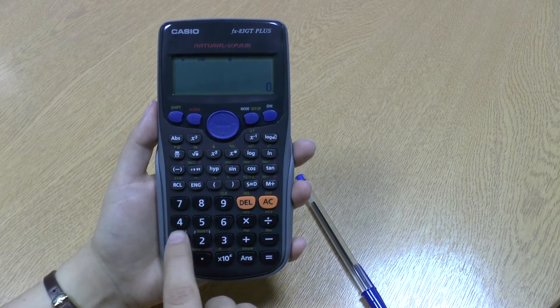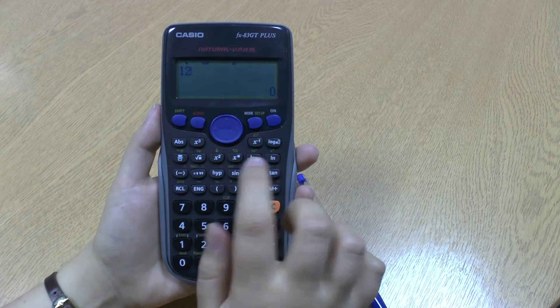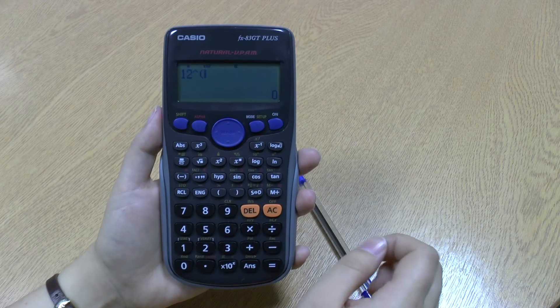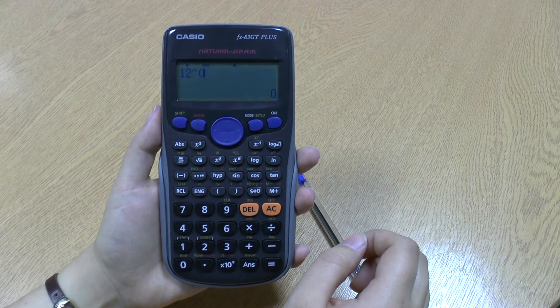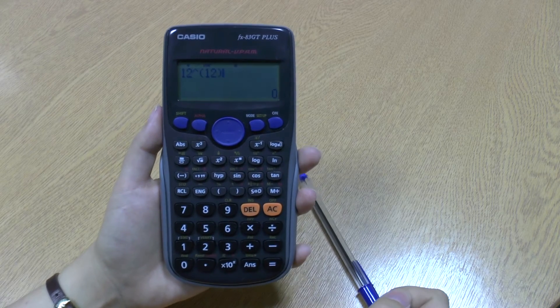So if I wanted to do 12 to the power of 12, I use x to the box, and again my hat comes up, which means to the power of. Put in my 12, close the bracket.